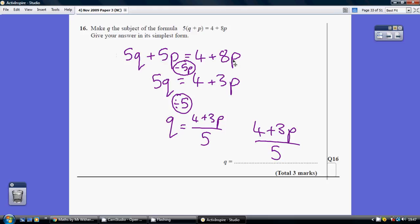Now we want to make q the subject, so we need to get just q on its own. Let's start off by getting rid of the plus 5p, then we're nearly there.